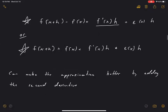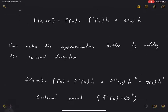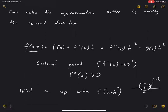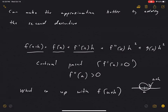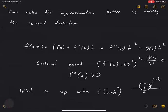We can make this approximation better by adding a second derivative term — this gets into Calc 2 material like Taylor polynomials. So: f(x+h) ≈ f(x) + f'(x)·h + (f''(x)/2)·h² + η(x)·h², where the error term η(x) goes to zero as h²→0. Including this second-order term makes the approximation more accurate, and the error shrinks as we get closer to the starting point x.